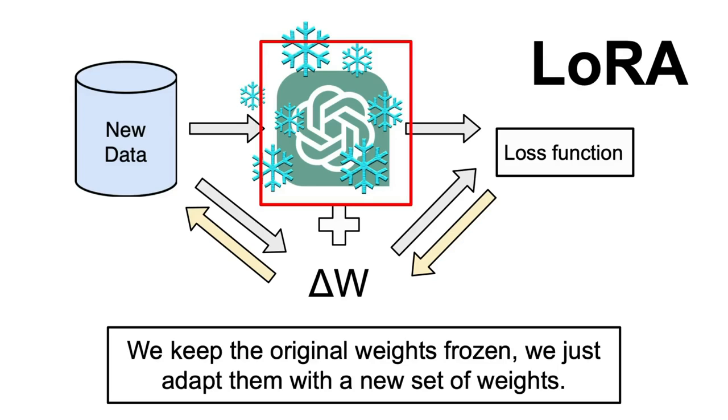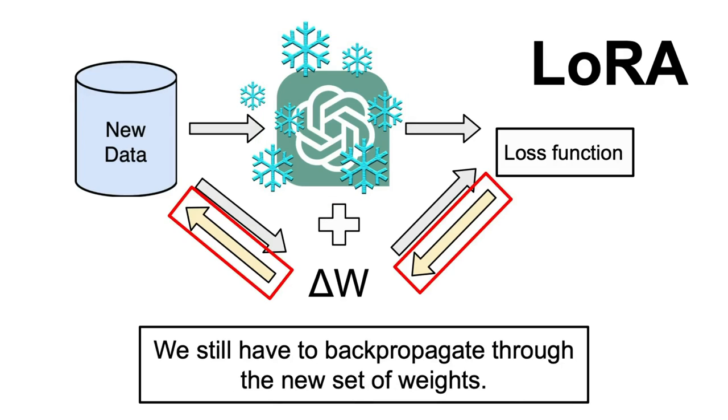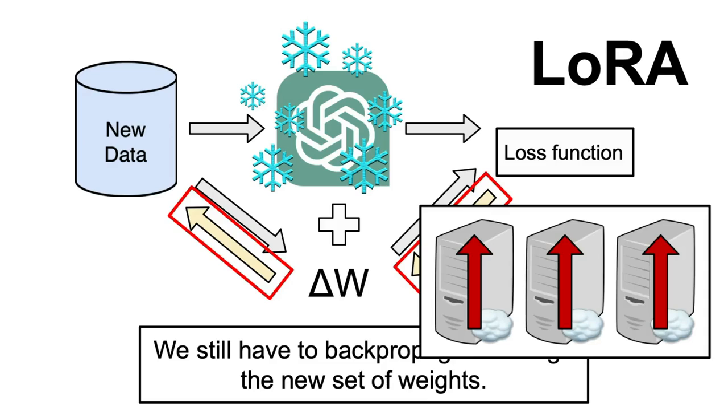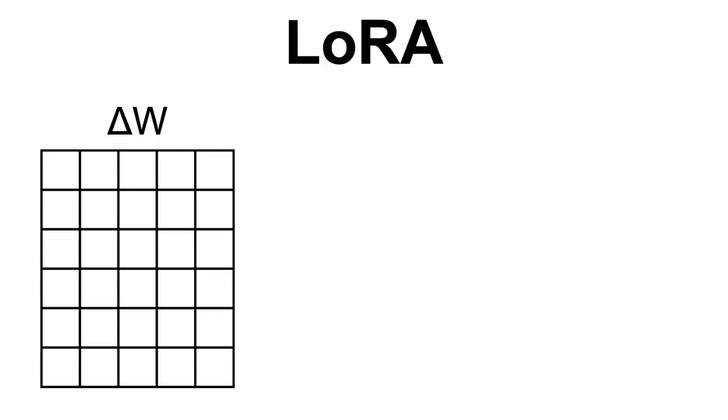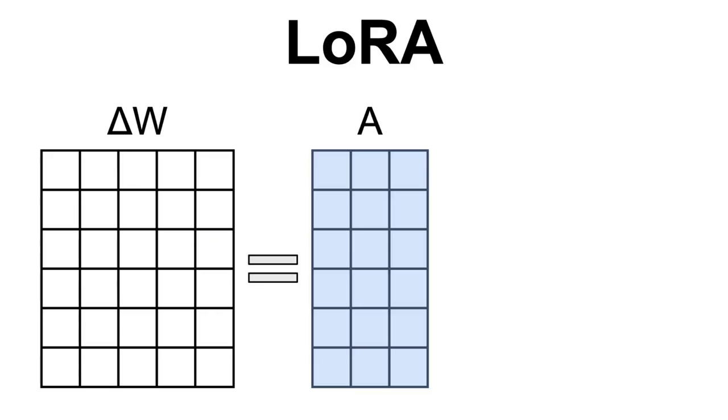But how about the first issue? How can we fine-tune such models without requiring a lot of computational power? Well, freezing the weights of the large language model solves part of the issue because we don't have to back-propagate through them. However, we have to back-propagate through the new set of weights that we have added for fine-tuning which could be still quite computationally intensive. The solution for this that LoRA proposes is to decompose this new set of weights into two matrices with a low rank.